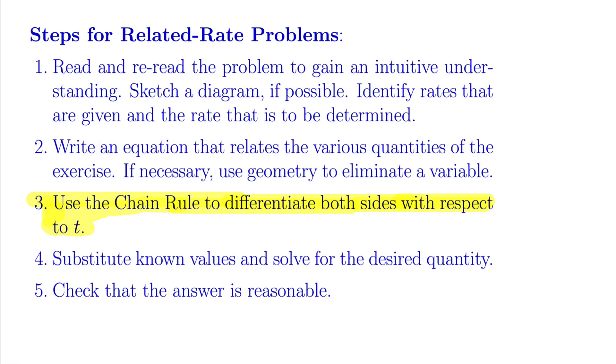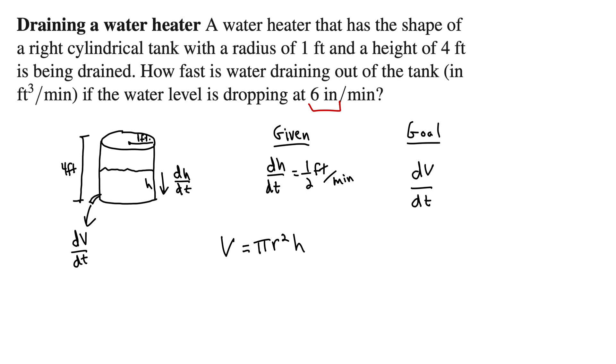Okay, so good to go there. Back to our steps. Step 3 says, use the chain rule to differentiate both sides with respect to t. Okay, we'll use the chain rule. What does that mean? Well, it just says we're taking the derivative with respect to time. So essentially we're doing d by dt of both sides.